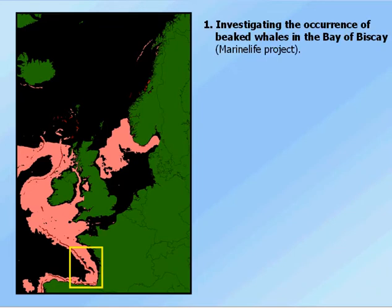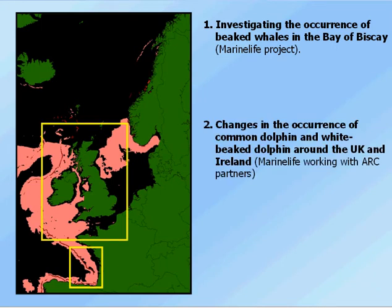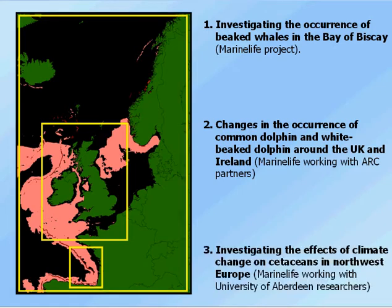The first is investigating the occurrence of beaked whales in the Bay of Biscay — this is very much a project being run by Marine Life and using Marine Life data alone. The second project is looking at the change in occurrence of common and white-beaked dolphin around the UK and Ireland, an example of Marine Life working with the Atlantic Research Coalition partners it has developed over the last four or five years. And finally, I'm going to look at the work we've been doing at the University of Aberdeen, working with Marine Life's data, to investigate the effects of climate change on cetaceans in north-west Europe.